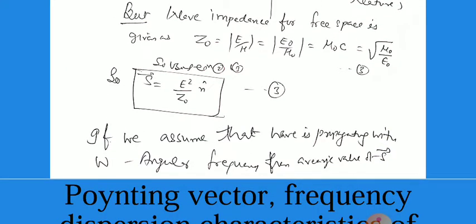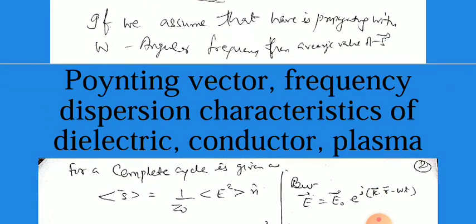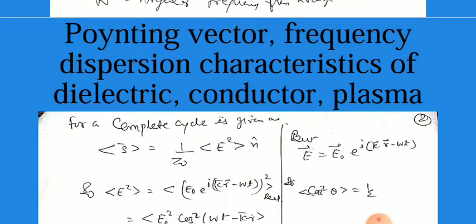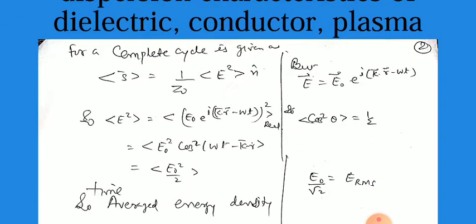If we assume that the wave is oscillating with angular frequency ω, then the average value of S over a complete cycle equals (1/Z₀) multiplied by the average of E² times n̂. We know that the electric field is in wave form: E = E₀ e^(i(k·r − ωt)). So E² averaged means taking the average of |E₀ e^(i(k·r − ωt))|². The real part is cos θ, so we need the average of cos²θ, which equals 1/2.